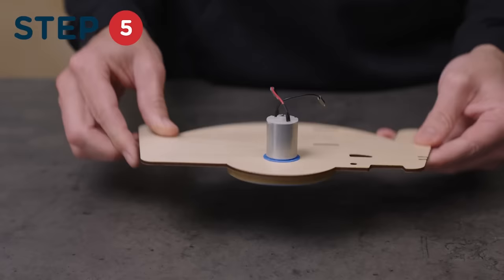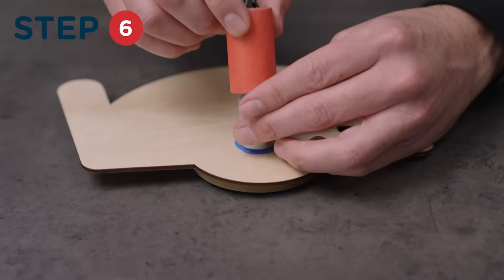Then, flip your launcher over and slide the red motor tube over the motor body. The two will be held in place by the adhesive foam.